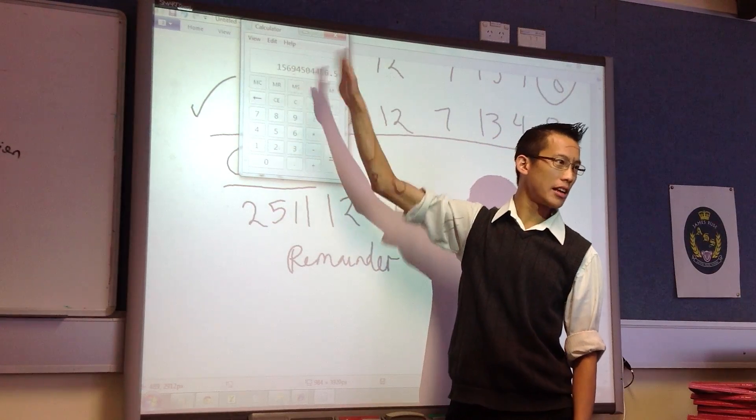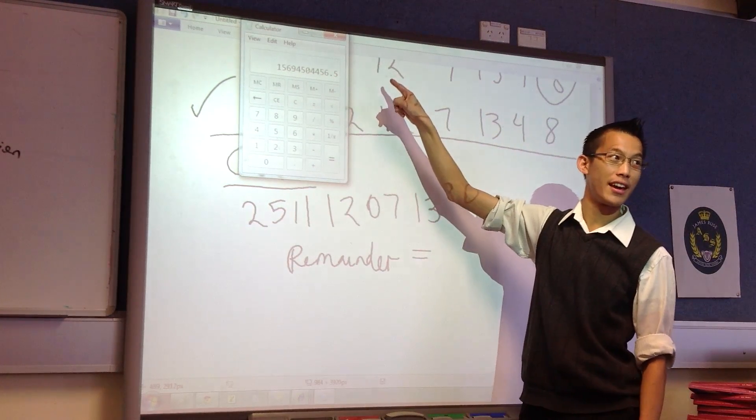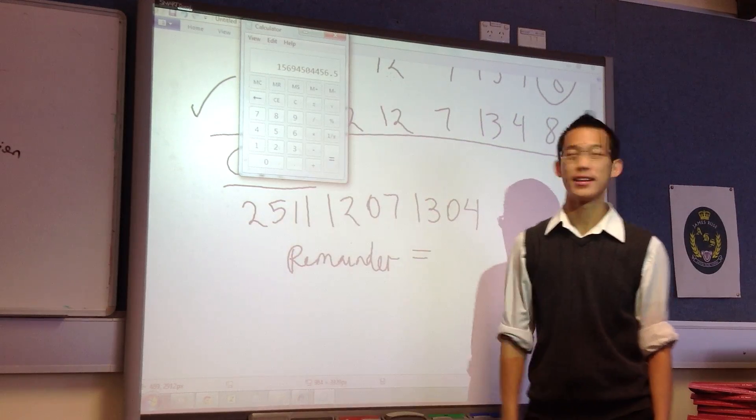Now this part, the big number, I'm not interested in. I'm actually interested in the bit on the end, right? Because that's the part that's going to give me the remainder.